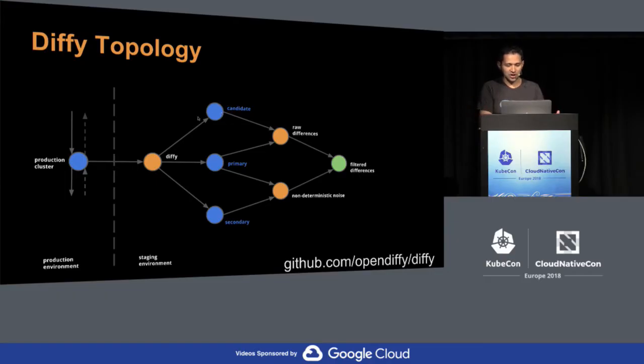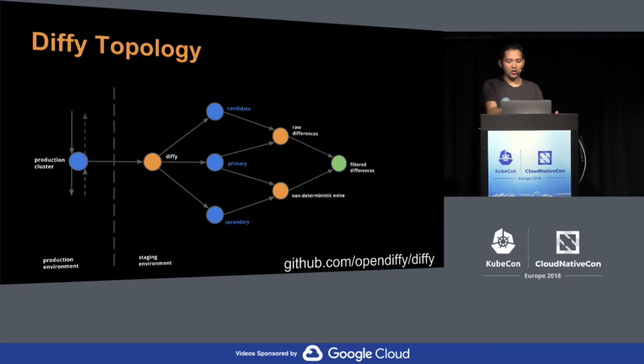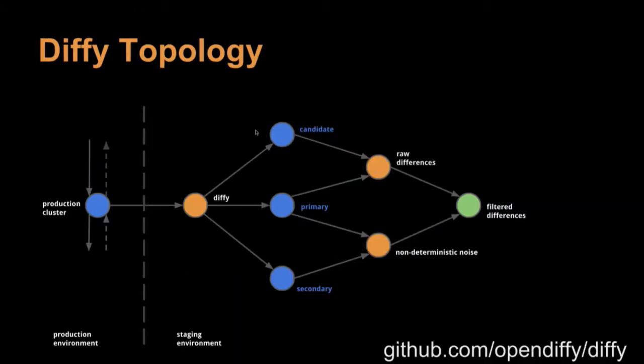The first instance is the candidate — the code that needs to be tested, a release candidate that might be deployed into production. The primary and secondary are instances of code already deployed in production, deployed on two instances here. When we get the responses back from candidate and primary, we compare those two — and those raw differences will have a lot of noise in them.